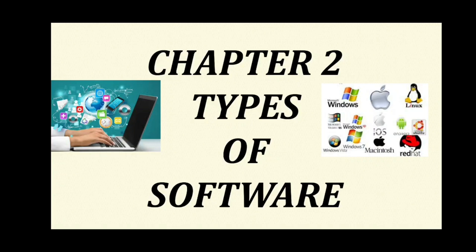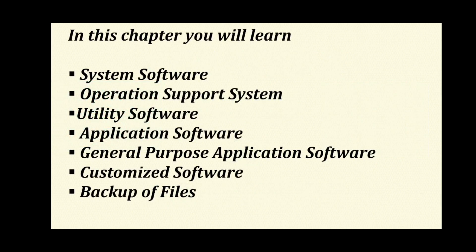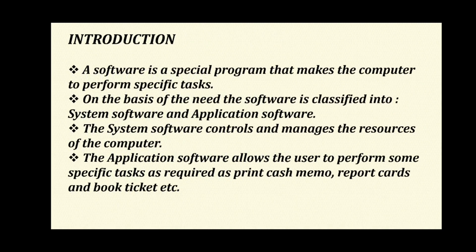Welcome, children. Today we will discuss the second chapter of computer, and that is types of software. In this chapter, we will learn about system software, operating system, support system, utility software, application software, general purpose application software, customized software, and backup of files. But today we will only cover the very first point, that is system software.